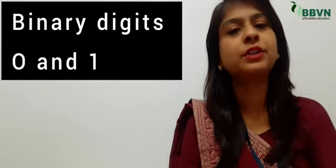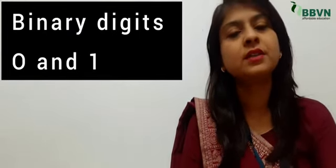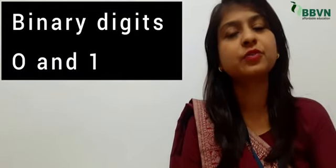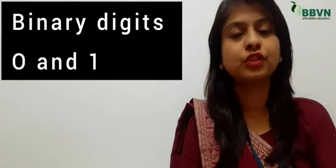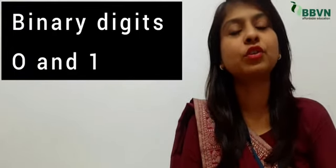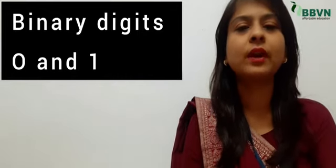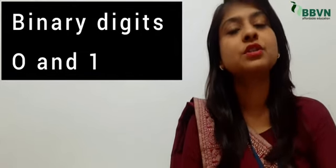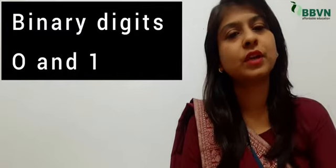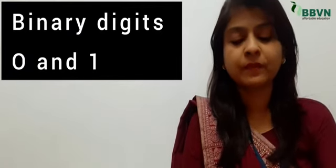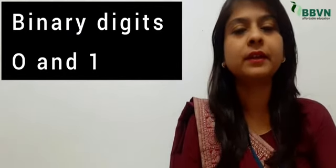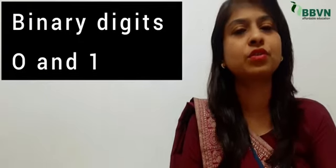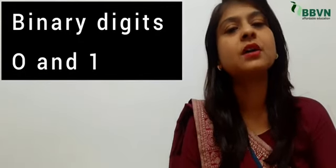Next point: a computer understands only two digits — zero and one. Jo computer hai wo hamare instructions aur data ko number wali language mein samajhta hai, aur number wali language mein zero and one digits aate hain. To aap jo bhi instructions computer ko de rahe hain, wo un saare instructions ko zero and one mein convert karke unhe samajhta hai. Aur in digits ko kya kehte hain? Binary digits. Agar aapko koi question aata hai ki binary digits kaun-kaun si hoti hain, to answer hoga zero and one.